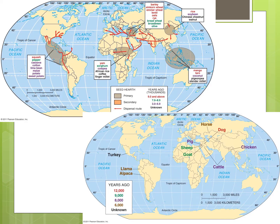A note for the AP exam: they expect students to know where certain prominent crops originated. Let's start in the Middle East, specifically a region known as the Fertile Crescent, between the Tigris and Euphrates rivers. The Fertile Crescent domesticated grains like wheat, barley, oats, and rye, as well as grapes, apples, and olives, and animals like sheep, goats, cattle, and camels.